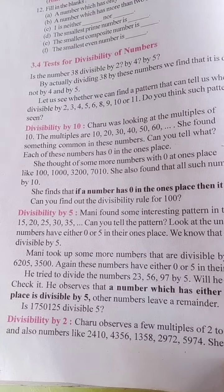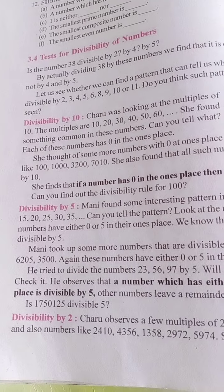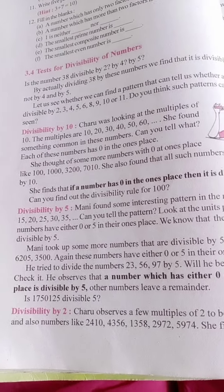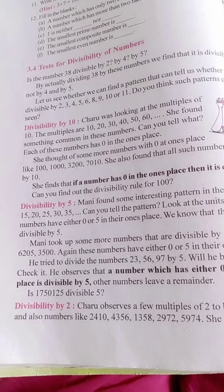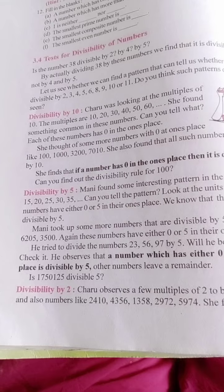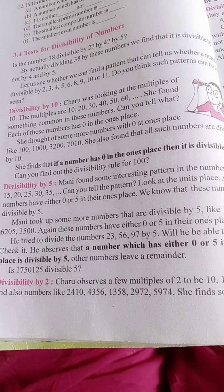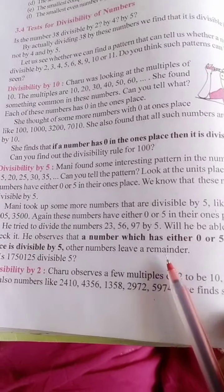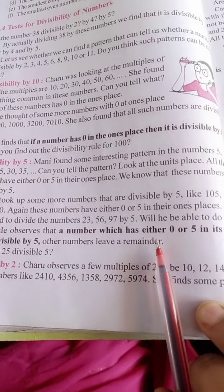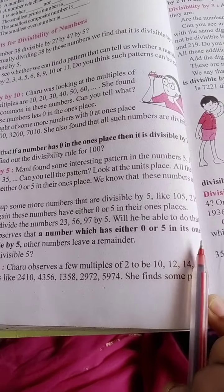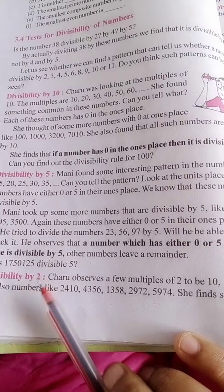Divisibility test by 5: a number is divisible by 5 if it has either 0 or 5 in its ones place.